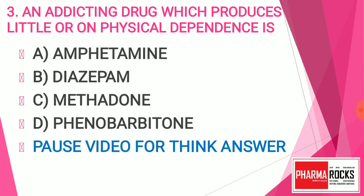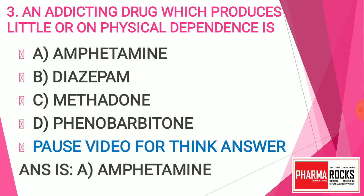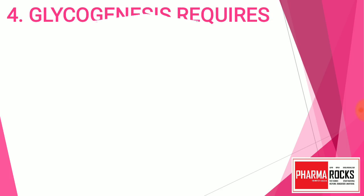Pause the video to think about the answer. The answer is A — Amphetamine. Amphetamine mainly causes addiction but produces little or no physical dependence. Now let's go to question number four: Glycogenesis requires — Glycogenesis requires?